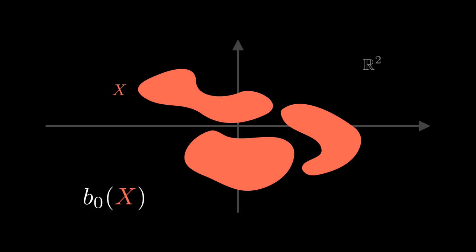I can count — visually in this case — the number of pieces. There's one, two, three. There are three pieces in this set X, so B₀ of X is equal to 3. Inclusion-exclusion lets us count X union Y if we can count X, count Y, and count their intersection. So let's apply this inclusion-exclusion thinking to count the number of connected components.